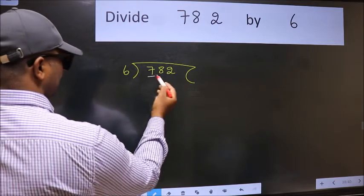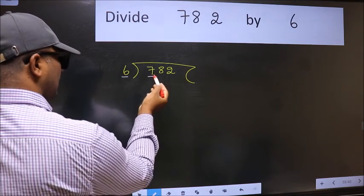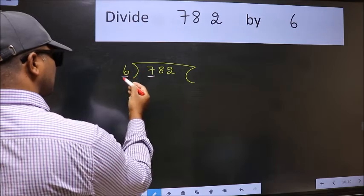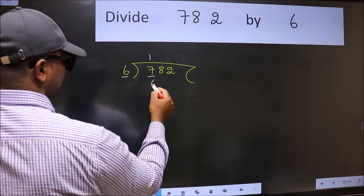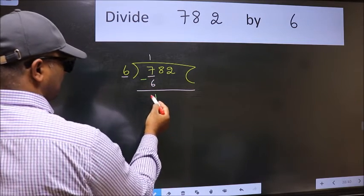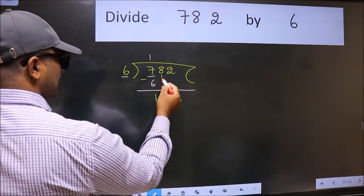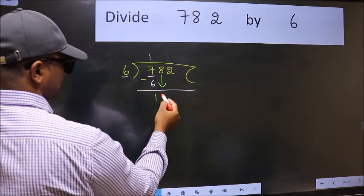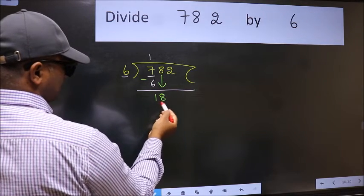Here we have 7 and here 6. A number close to 7 in 6 table is 6×1=6. Now we should subtract. We get 1. After this, bring down the beside number. So 8 down. So 18.